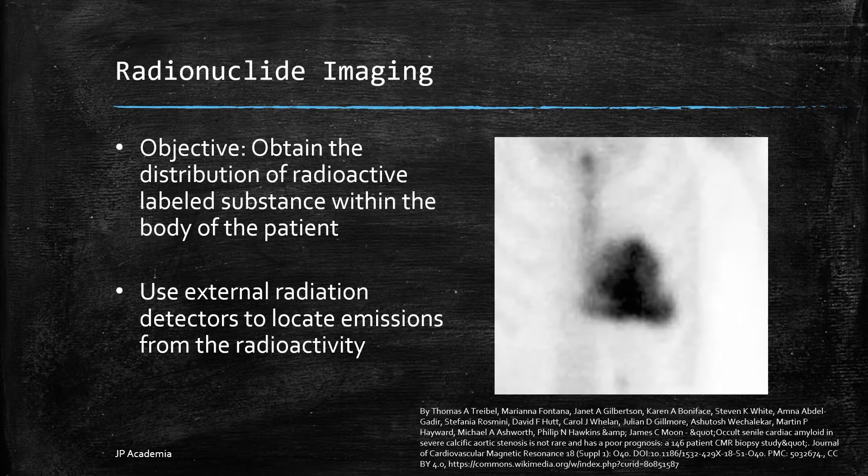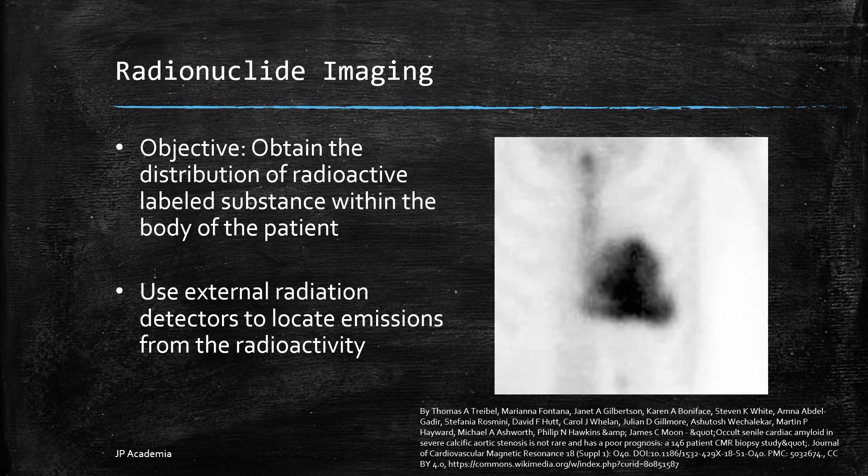The objective of radionuclide imaging is to obtain the distribution of radioactive labeled substance within the body of the patient after it has been administered to the patient, usually through intravenous injection. A DPD scan is a type of nuclear imaging test, as shown here at the right, which uses radioactive technetium-99M and DPD to diagnose cardiac amyloidosis.